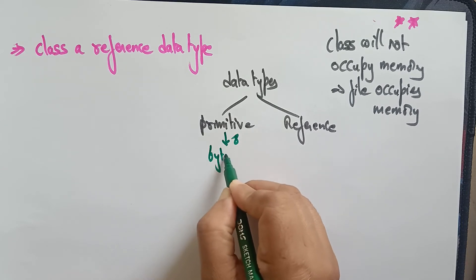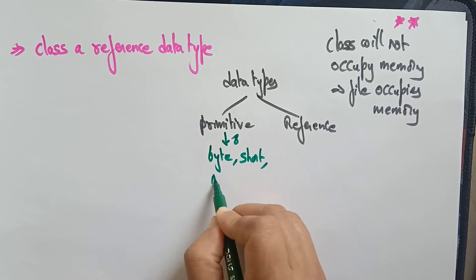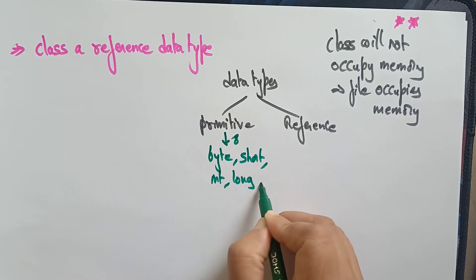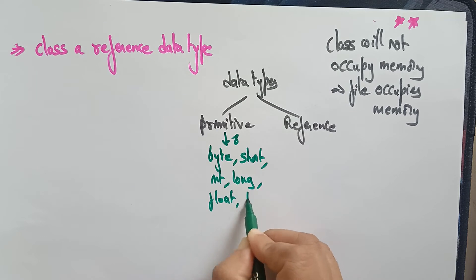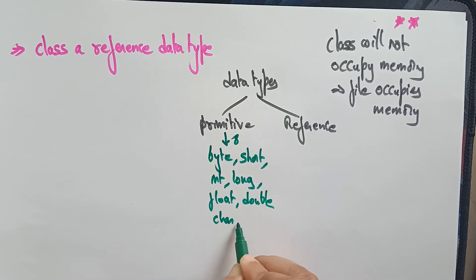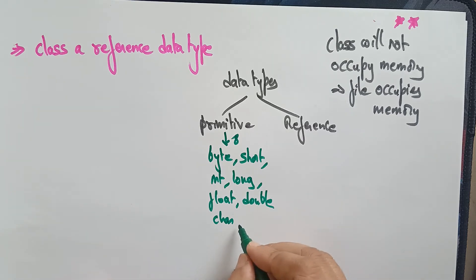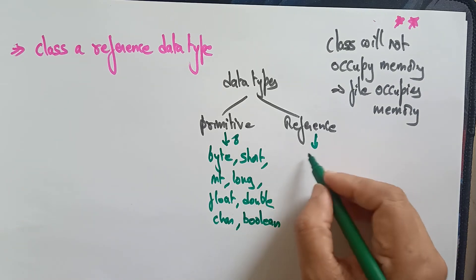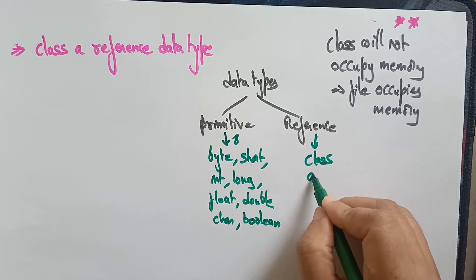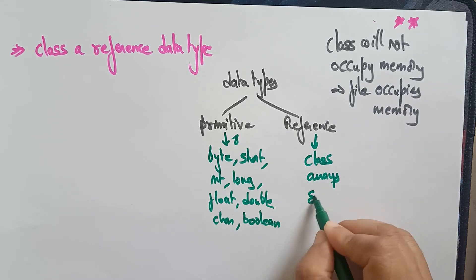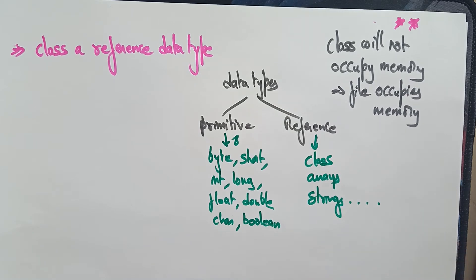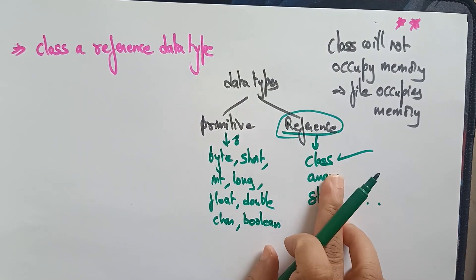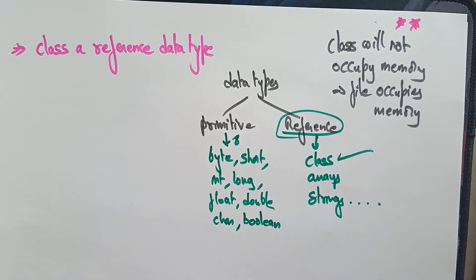Primitive data types — there are eight total: byte, short, int, long, float, double, char, and boolean. Reference data types are: class, arrays, strings, interfaces, and so on. So from this, you can see that a class is indeed a reference data type.